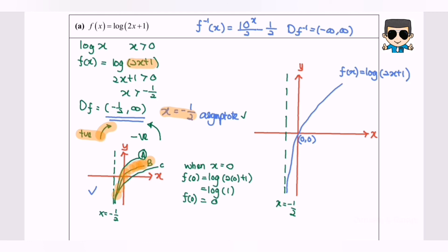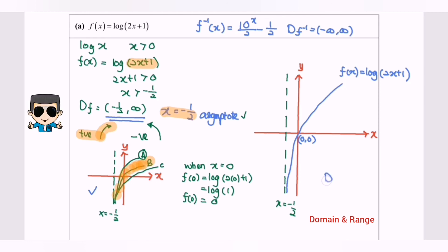Next, we discuss the domain and range. The domain for F is negative 1 over 2 to infinity, where negative 1 over 2 is not included. As for the range of F, the answer is negative infinity to infinity — because by referring to the graph, the lower values of y approach negative infinity and the maximum values of y approach positive infinity. Thanks for watching.